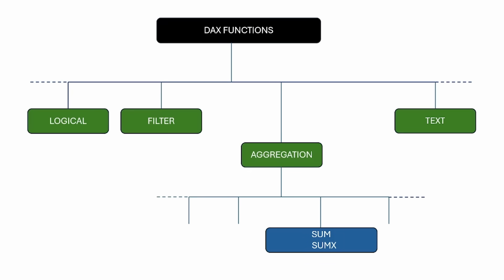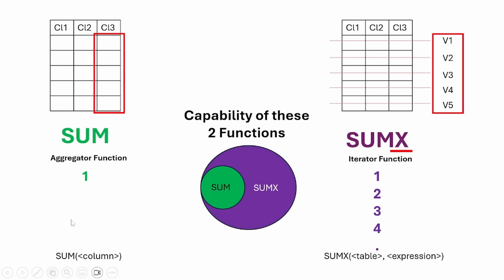Before we move on to the demo, I just want to explain the difference between these two DAX functions and their capabilities. On the left hand side we have the SUM DAX function, which is pretty self-explanatory. SUM is an aggregator function — it will take a column name as its argument and make a sum of all the elements in it to give us a total. SUMX is a tad different.